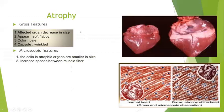Grossly, in atrophy, here you can see a gross picture of a heart. The affected organ is decreased in size. It appears soft and flabby. The color is pale and the capsule is wrinkled. Microscopically, the cells in atrophic organs are smaller in size and there is an increase in space between the muscle fibers.